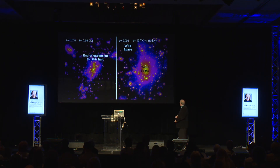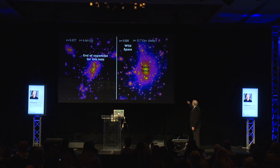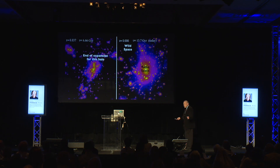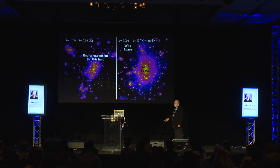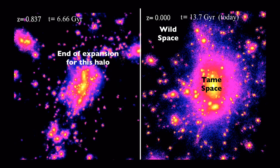Nancy Abrams suggested a wonderful terminology for this. This region is held together by gravity and is not expanding — our galaxy is not expanding, the local group is not expanding. But the space between these gravitationally bound regions is expanding faster and faster. This part is tamed by gravity, but the wild space in between the gravitationally bound regions — that's what's being torn apart by the dark energy.